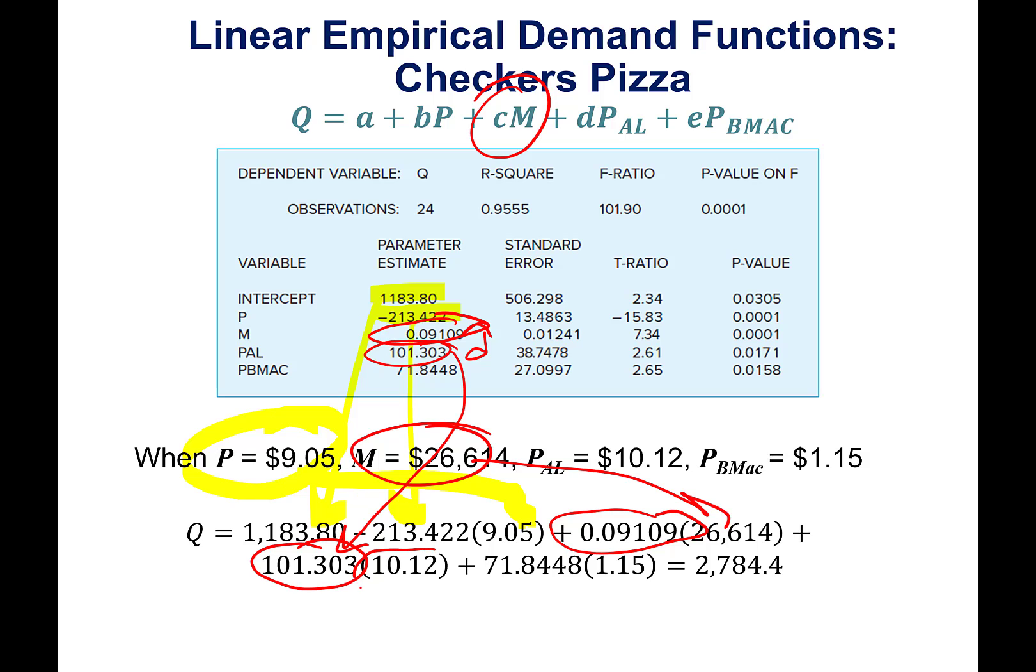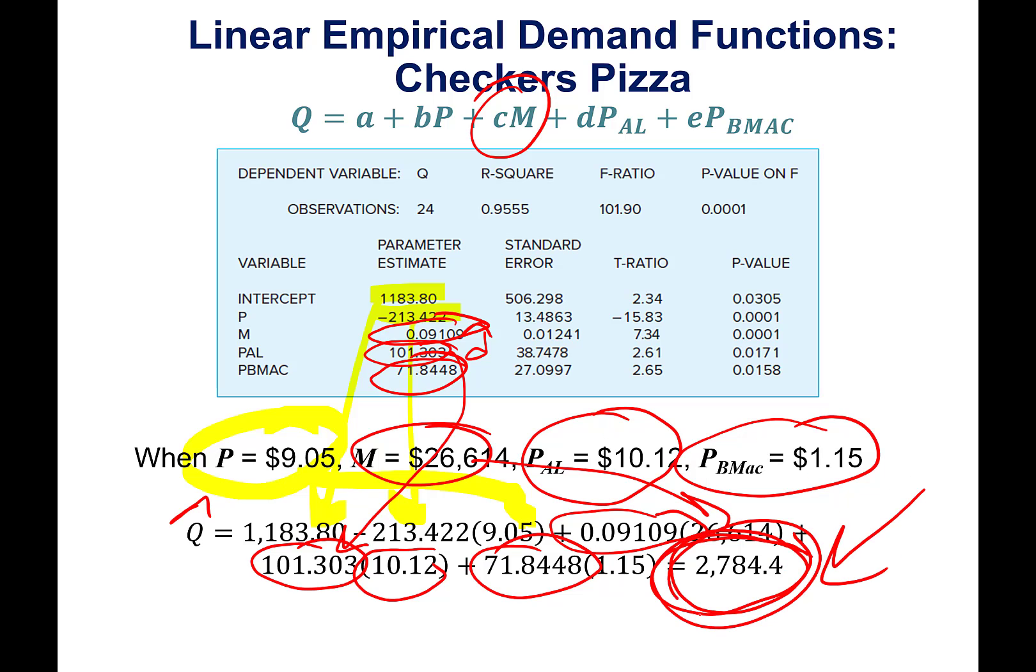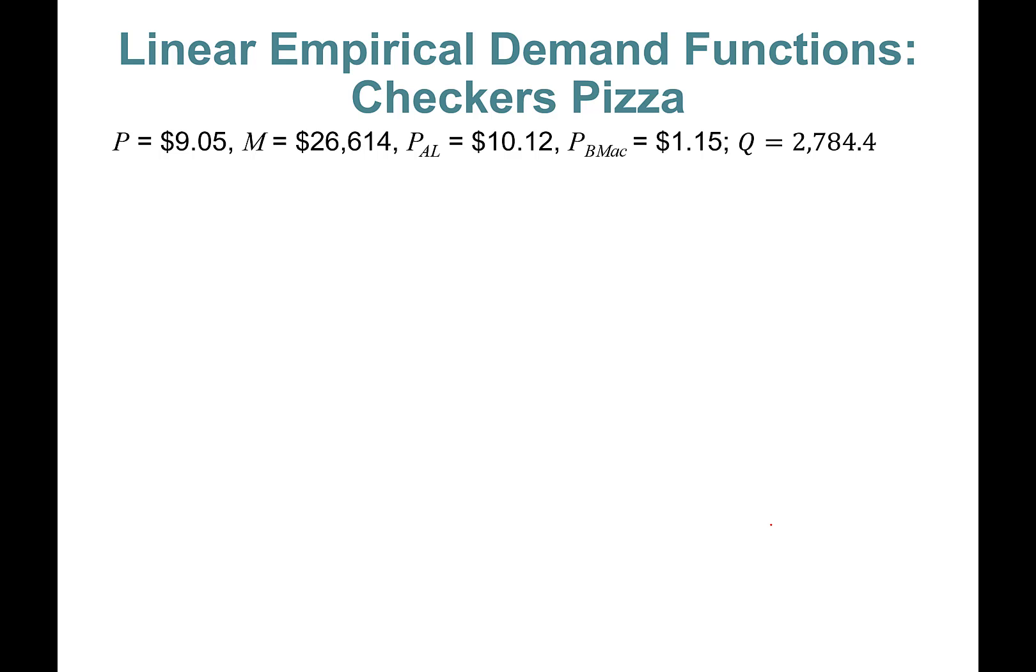And the last one is going to be E-hat, 71.8448, times the price of Big Mac. So Q-hat you'll find is going to be 2,784.4. Given these numbers and your demand function, your sales are going to be 2,784.4 pizzas a month. I'm just putting up all those numbers so that we can calculate elasticities.